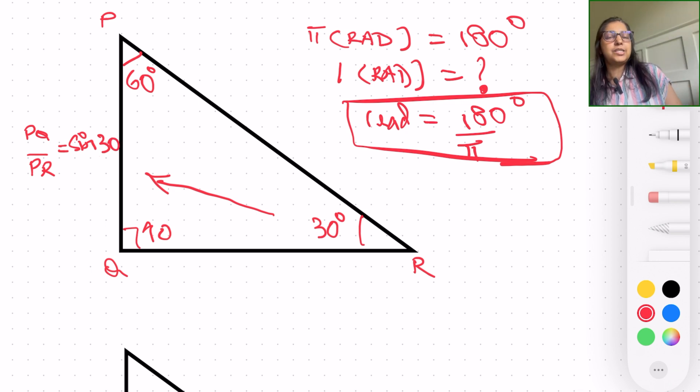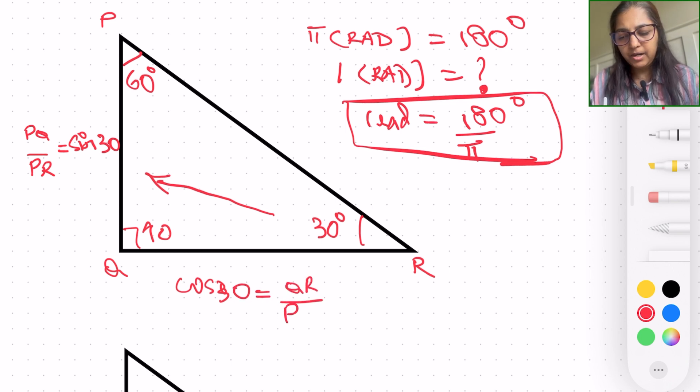Now, if you key the value sine 30 in your calculator, you will get an answer, and I will tell you what that is in a second. Just bear with me. Same way, cosine of 30 is going to be QR divided by PR. And we have tangent of 30 given by PQ divided by QR.